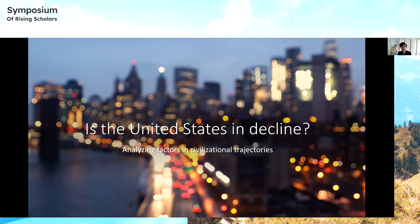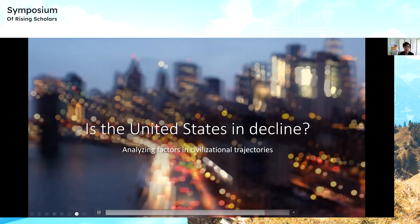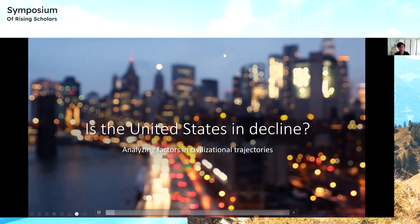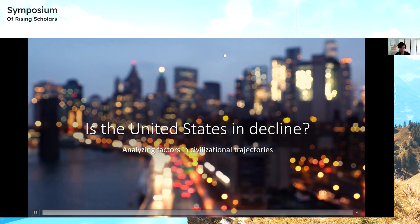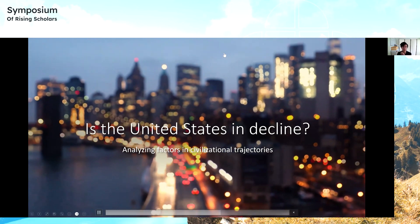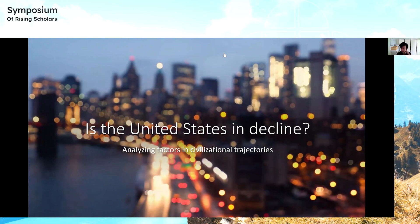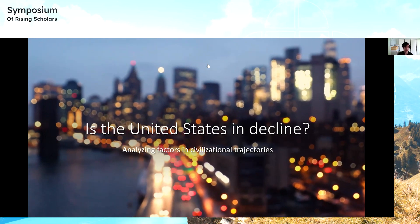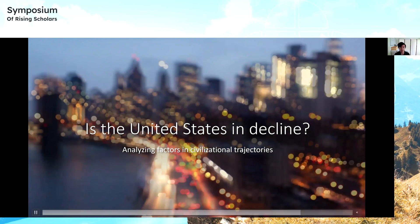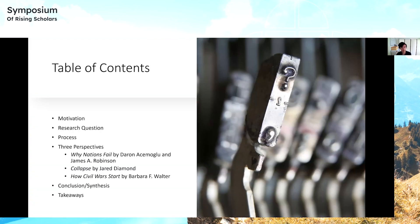Hello everybody. My name is Anwen Hao, and I will be presenting on this research project. The research question in its most simplified form is: is the United States in decline? Here is a brief outline of what we'll be talking about today. I'll first talk about why I chose to do this project, and then the takeaways that I got from this project.